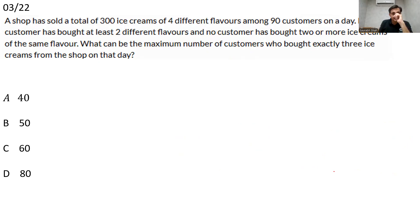Third question. 300 ice creams, 90 customers. You can pause the question if you want to understand. 300 ice creams have been bought. 90 customers are there. Every customer has to buy two flavors. So that's compulsory. So let everybody buy two flavors. Now we are left with 120 ice creams to be purchased.